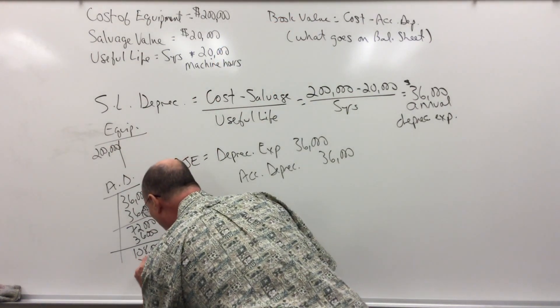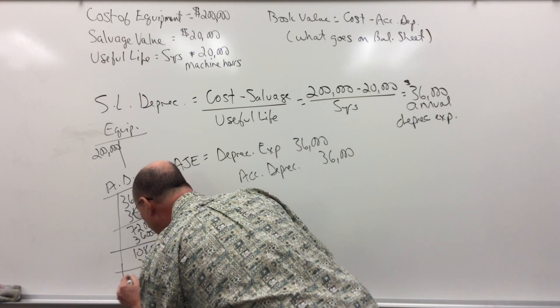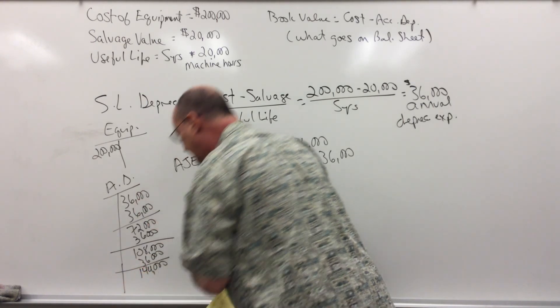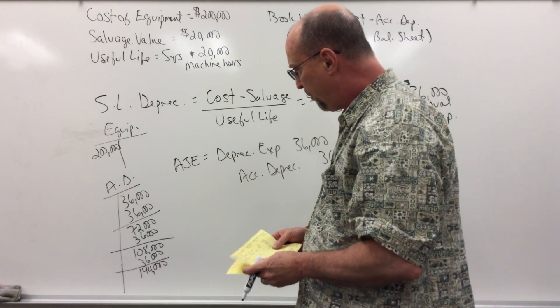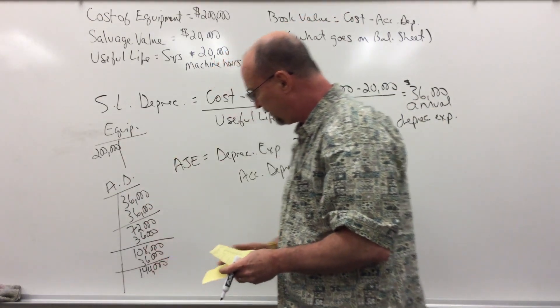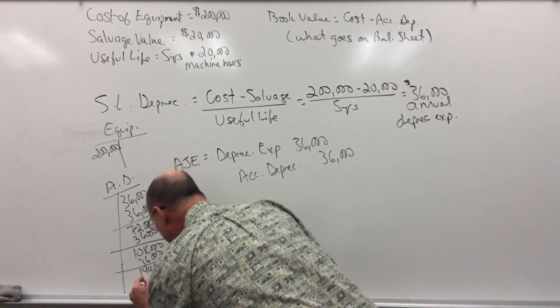End of year four, I'm at $144,000, so my book value, $200,000 minus $144,000, is $56,000. And at the end of year five...